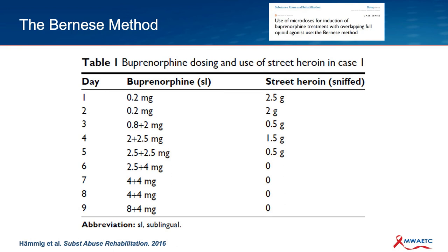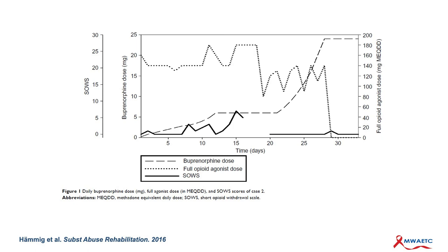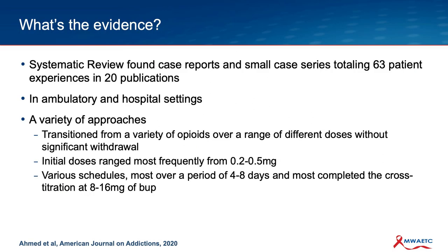I want to spend a couple of minutes on this paper out of Bern, Switzerland, that was the first to describe outcomes with microdosing. One patient was using heroin and they had a pretty complicated up-titration strategy of buprenorphine, and they were successfully able to get them onto buprenorphine. A second patient was on heroin-assisted treatment — which is legal in Switzerland. The dotted line is their full agonist diacetylmorphine, and this line is the dose of buprenorphine, gradually up-titrated over a month while the diacetylmorphine dose came down — and the patient didn't experience significant withdrawal.